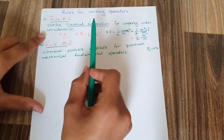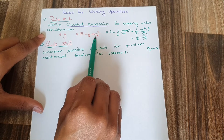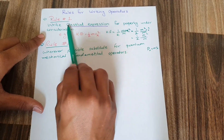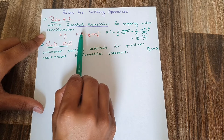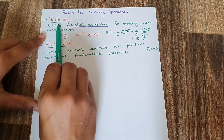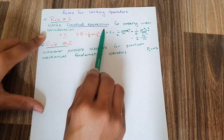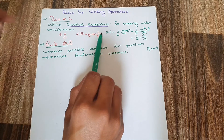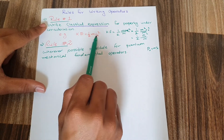For example, if I take the expression for kinetic energy, it is equal to half mv squared. Rule 1 says that first of all I have to write the classical expression for the property under consideration. Since I want to write kinetic energy in terms of an operator, and we are taking motion in one direction x, kinetic energy equals half mv squared.